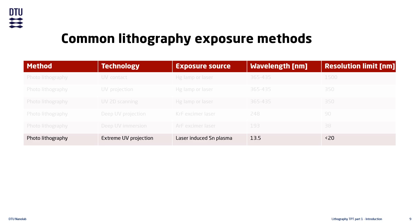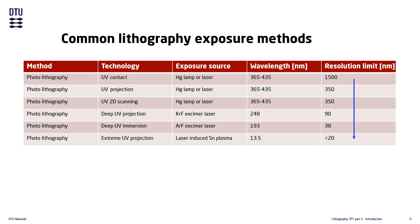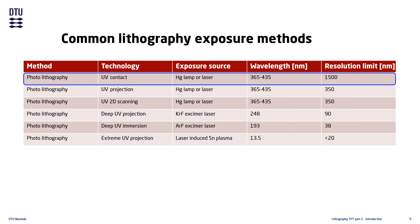The minimum possible resolution is improved as the exposure wavelength gets smaller. Some methods, like UV contact lithography, have a minimum possible resolution that is much larger than the exposure wavelength. This is due to physical limitations when using photomasks in contact with the substrate.